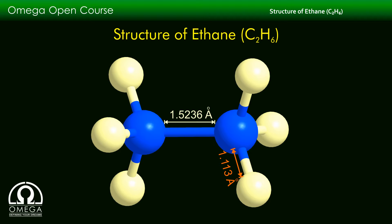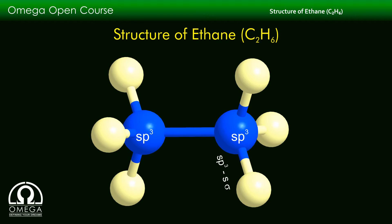There is one carbon-carbon bond and six carbon-hydrogen bonds. The carbon atom is in sp3 hybridization. The carbon-hydrogen bond is formed by sigma overlapping of sp3 hybridized orbitals of carbon with the s orbital of hydrogen. The carbon-carbon bond is formed by sigma overlapping of sp3 hybridized orbitals of both carbon atoms.